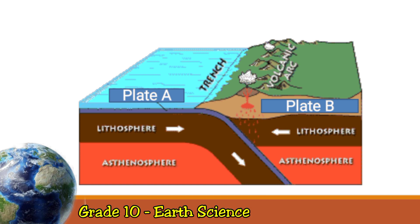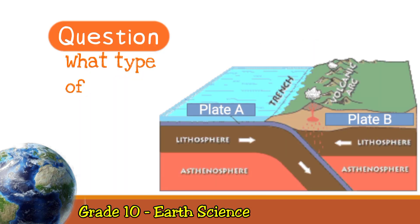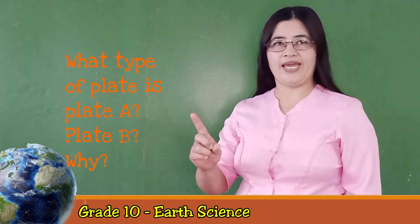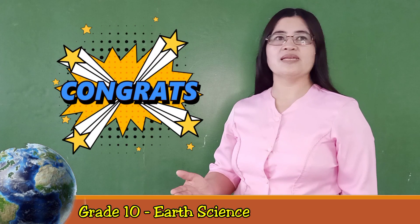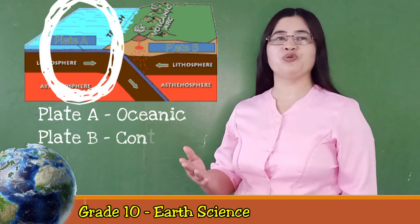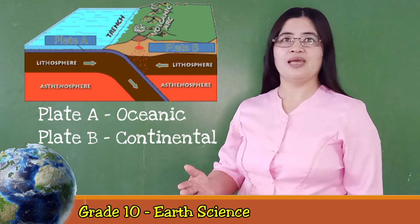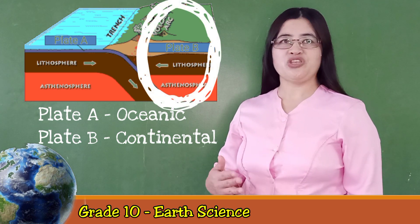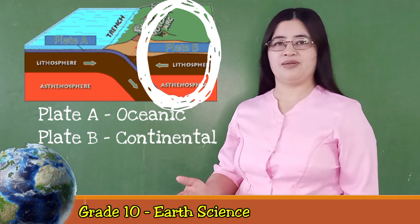Let us analyze this picture. What type of plate is plate A? What about plate B? Plate A is an oceanic plate because it is relatively thinner compared to plate B. Meanwhile, plate B is a continental plate because it is thicker and floats higher than the other plate.